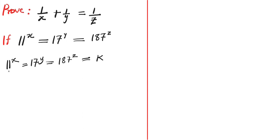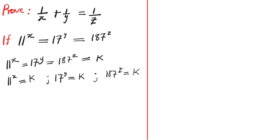The next step is for us to equate each of these terms to this constant k. So we have 11 power x equals to k, we can also have 17 power y equals to k, and we can also have 187 power c equals to k.